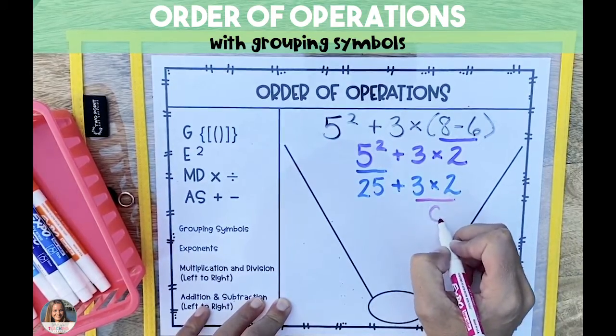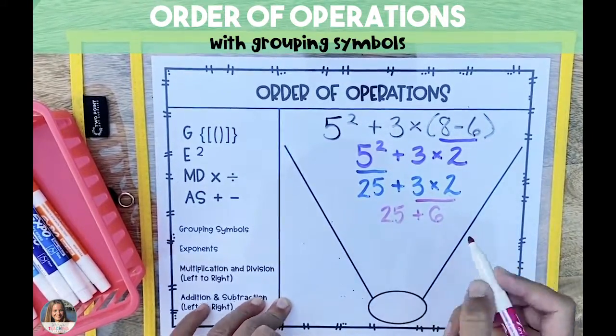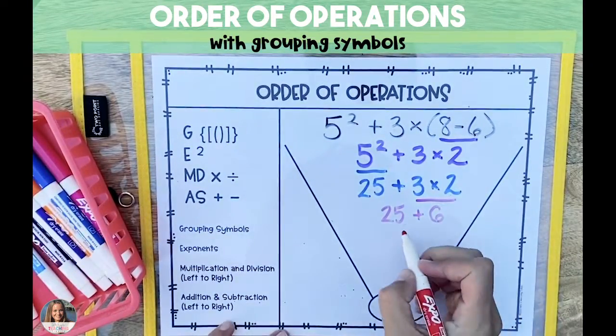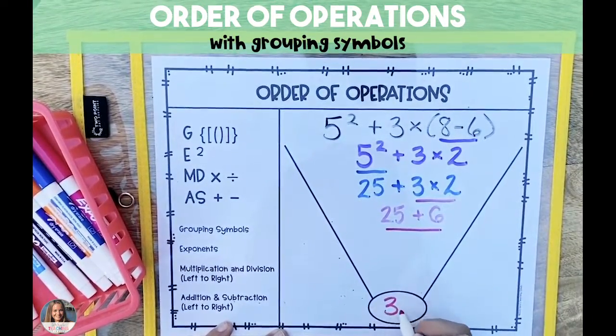Next we're going to solve the multiplication problem, bring the remaining pieces down, and then our last operation to solve is addition with 25 plus 6, which is 31.